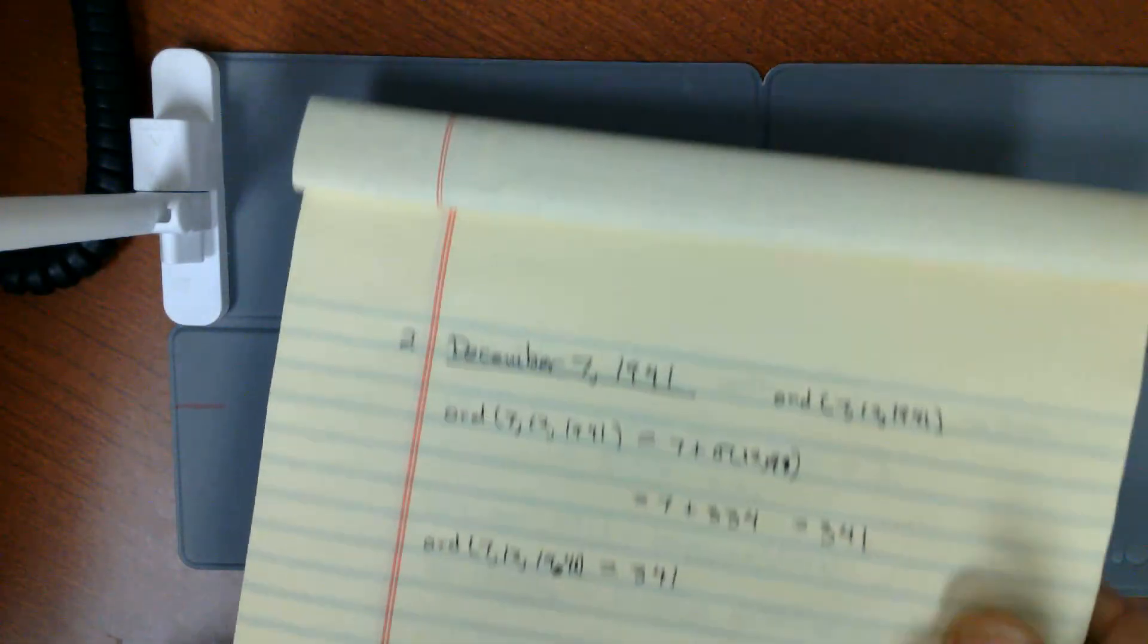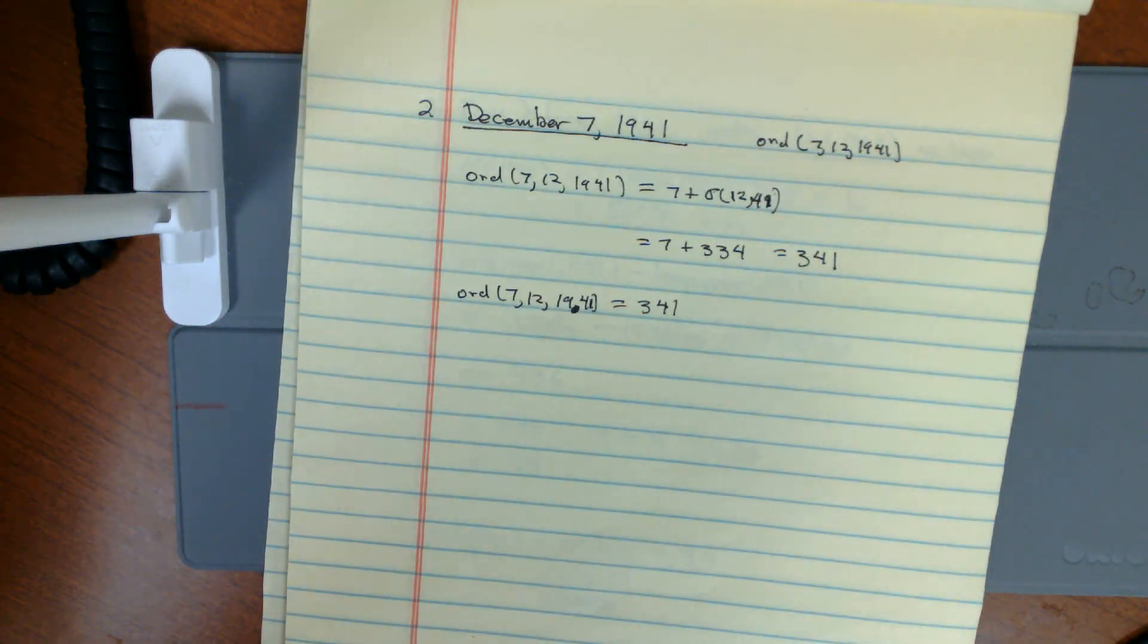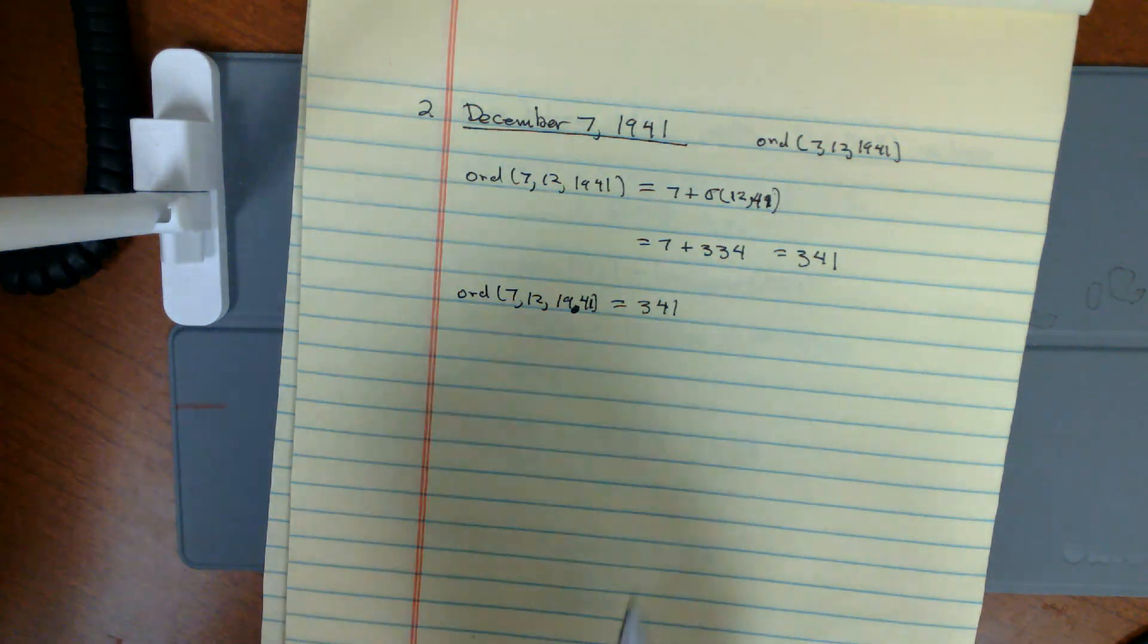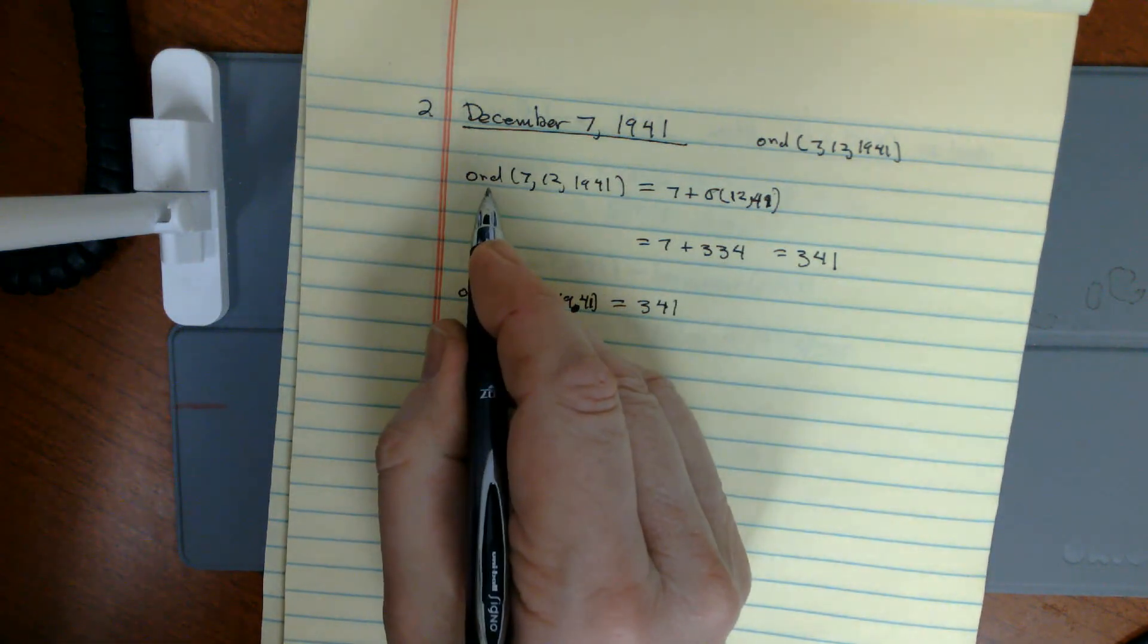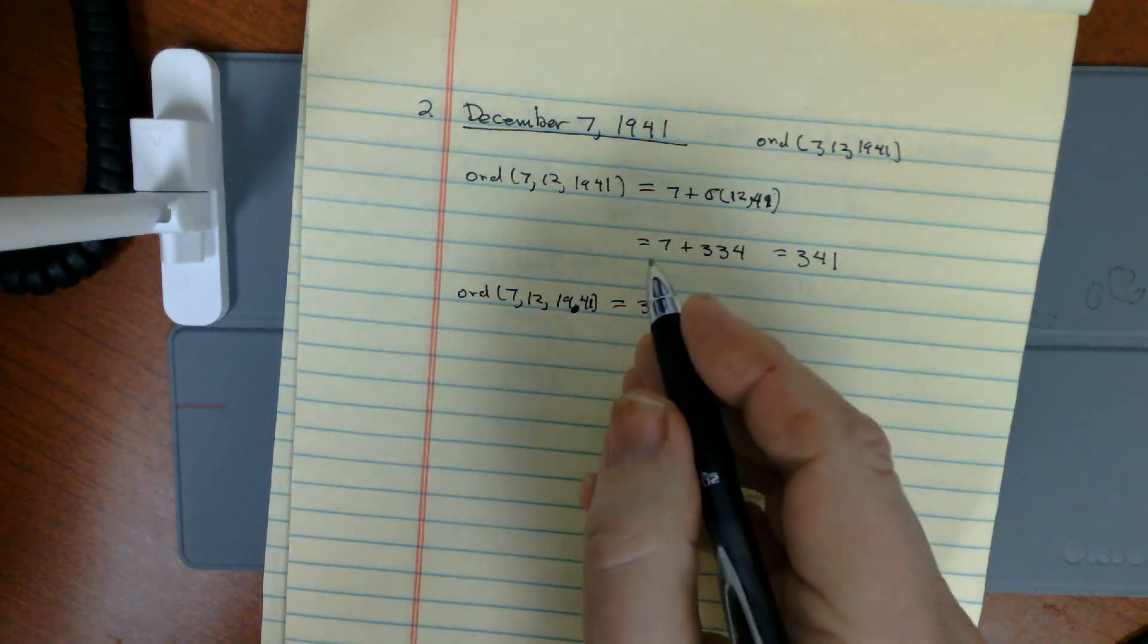Now, do another calculation. We have December 7th, 1941. I want to calculate what the ordinal day of the year is. I have a little o ordinal day, that's what day of the year it is.